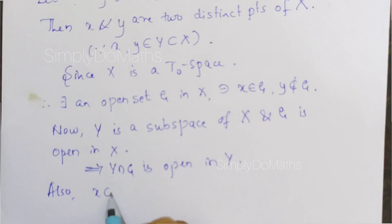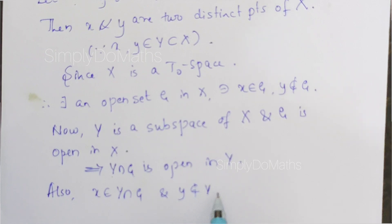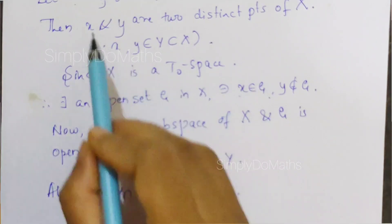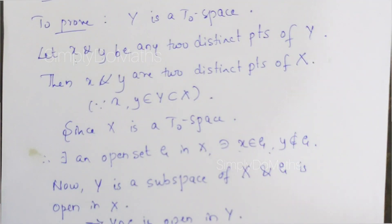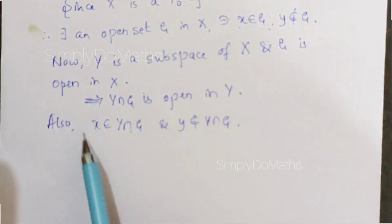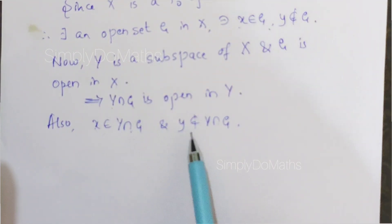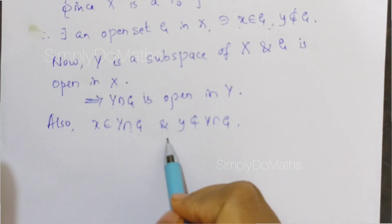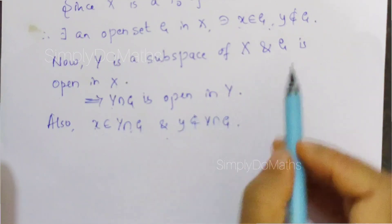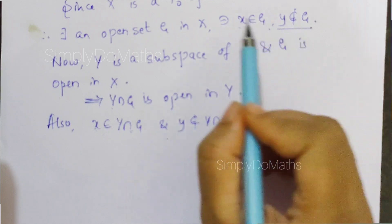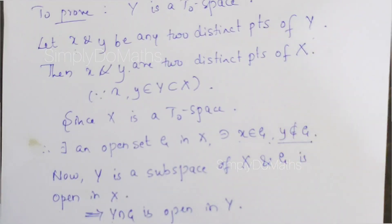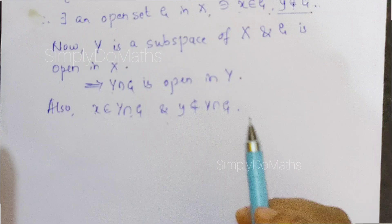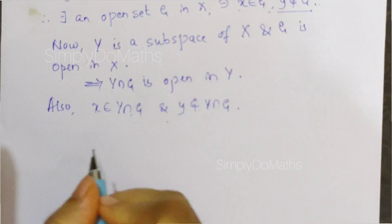Also, x belongs to Y intersection G and y does not belong to Y intersection G. Here, x belongs to Y and x belongs to G, therefore x belongs to Y intersection G. But y does not belong to G, and y belongs to Y — therefore y does not belong to Y intersection G.